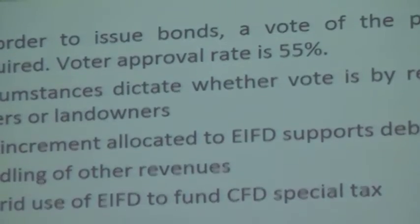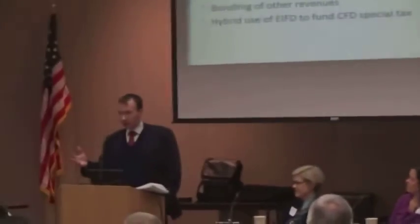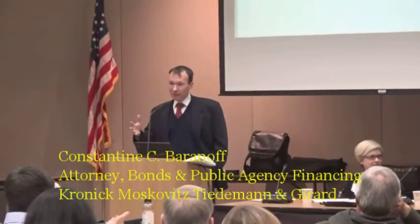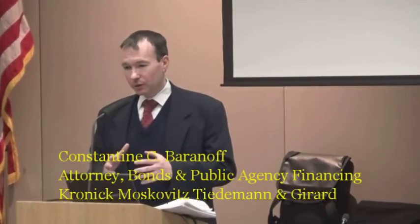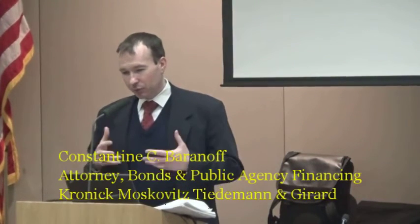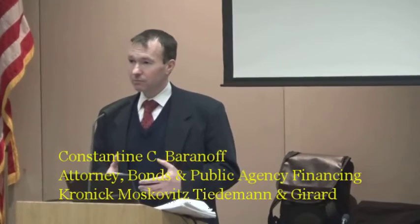Issuance of bonds: voter approval is required to have the bonds be issued, and that approval rate is 55%. Depending upon the amount of registered voters within the boundaries of the EIFD, the vote may either be by the landowners or by the registered voters. If you have fewer than 12 registered voters, then you can get a landowner election, and if you can get waivers, the election process is condensed. If you have registered voters, the election process is expanded and you probably need to engage in some type of voter education program — to tell the voters your story, tell them this is the investment program, this is why it will help the area that you live in.